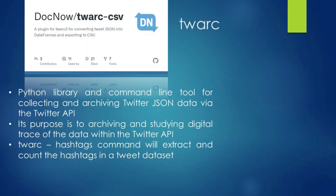Now we will see what Twarc is. It is a Python library and command line tool for collecting and archiving Twitter JSON data via the Twitter API. Its purpose is to archive and study digital traces of data within the Twitter API. Twarc hashtag commands will extract and count the hashtags in tweet data.